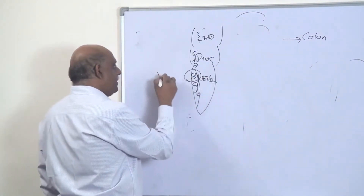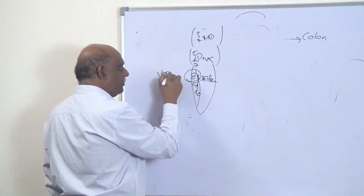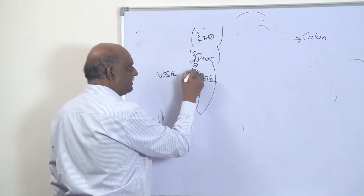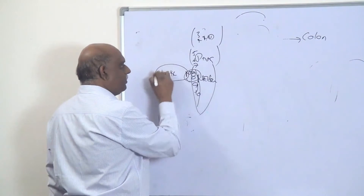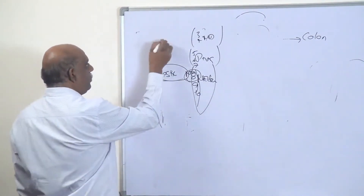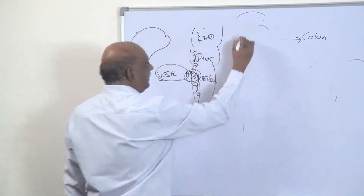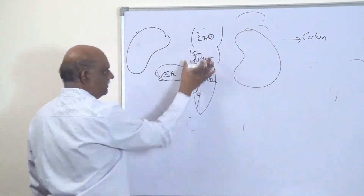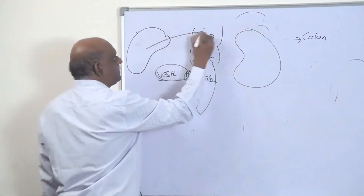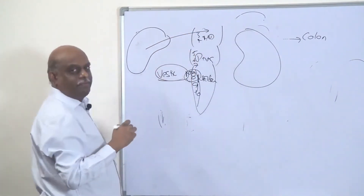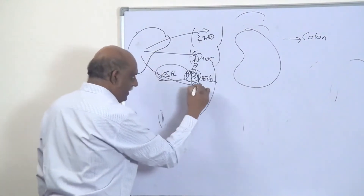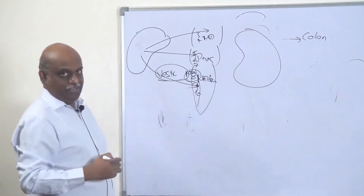The 8th cranial nucleus is called the vestibulo-cochlear nucleus. If you look at the cerebellum surrounding the brainstem, there is a superior cerebellar peduncle connecting with the midbrain, the middle cerebellar peduncle with the pons, and the inferior cerebellar peduncle with the medulla.